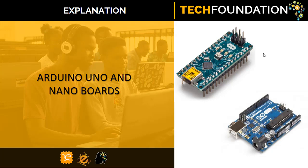To properly assign the right amount of space for storage in memory, C++ provides us with data types. Data types do not only help the computer to assign the right amount of memory space, but they also contain information about the kind of operations that can be performed on a given data. For instance, if a given data is an integer then it can be multiplied, added, and divided. But if a given data is a string data type like the name of a person, then multiplying it by two does not make sense, and hence the computer will not be allowed to do that.